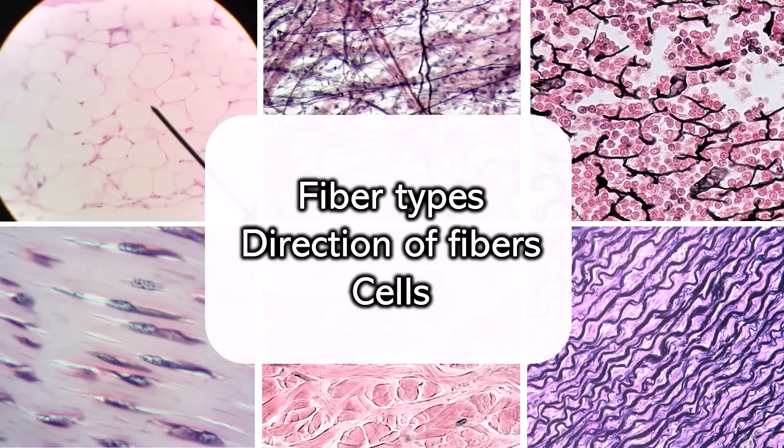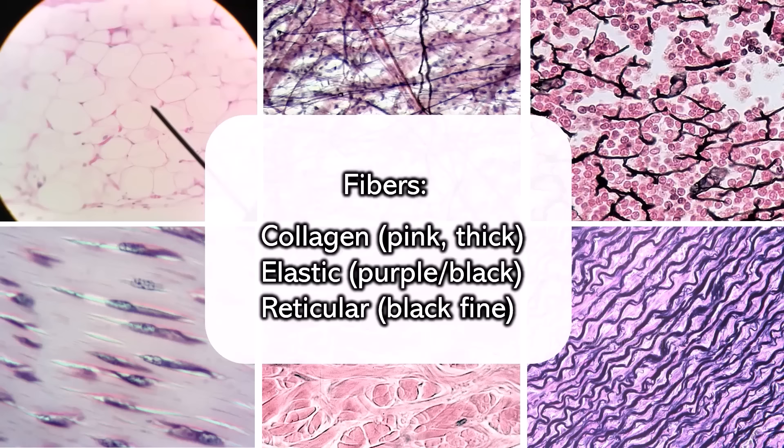There are three possible fibers: collagen, elastic, and reticular. Collagen is the thickest, elastic is medium, and reticular is the finest. The color depends on what type of stain was used. Collagen and elastic are visible with the most common stain as pink and purple, but reticular usually can't be seen because it requires a special type of stain.